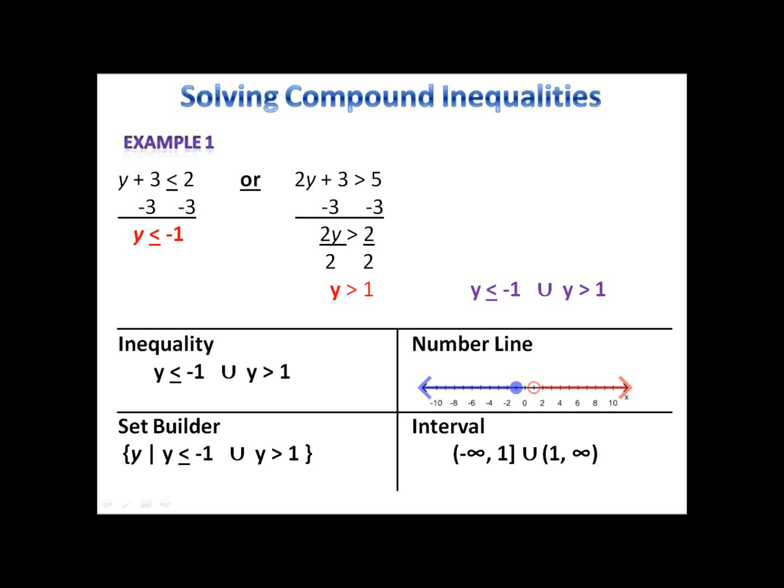What does this mean? Pick any of the values in the shaded area on the number line — they can be fractions, decimals, square roots, numbers like pi, anything that's in there. If you plug it into the original inequalities, it will fall into the union, meaning it will either be in the first one or it will be in the second one.